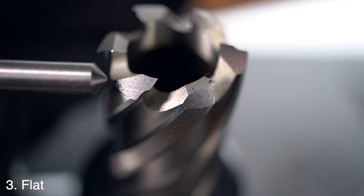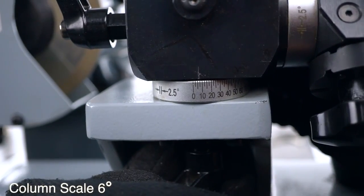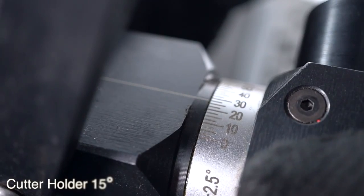The last position you have to resharpen is the flat teeth. Set the column scale at 6 degrees and the cutter holder at 15 degrees.